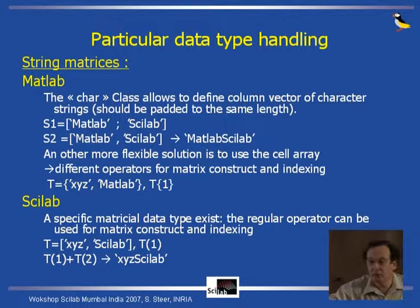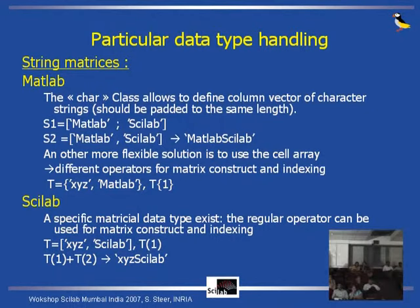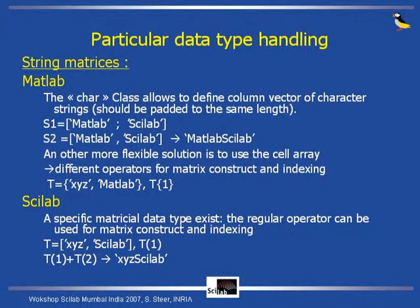The second solution is to use the cell array, which is a generic object that allows putting other data in a matrix-like way. But here you have to use different operators to construct matrices and to index them. For example, if you want to construct a row vector containing the strings 'XYZ' and 'MATLAB', you have to use curly brackets instead of square brackets. And if you want to get the first element of this vector, you also have to use curly brackets. In Scilab, there is a specific matrix data type for strings, so we can use the regular operators for matrix construction and indexing. For example, I build T as a row vector ['XYZ', 'Scilab'], and T(1) returns 'XYZ'. To concatenate strings, I use the plus operator.